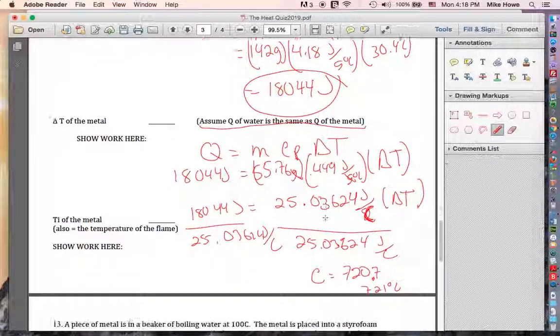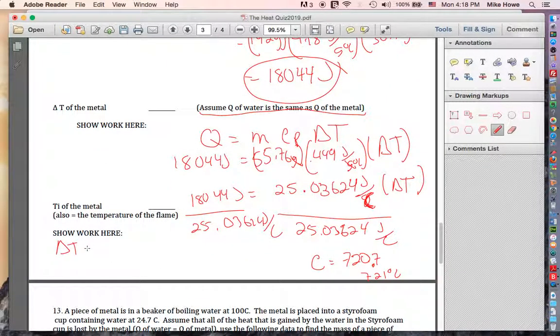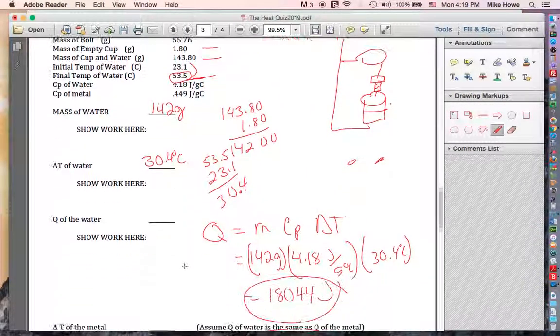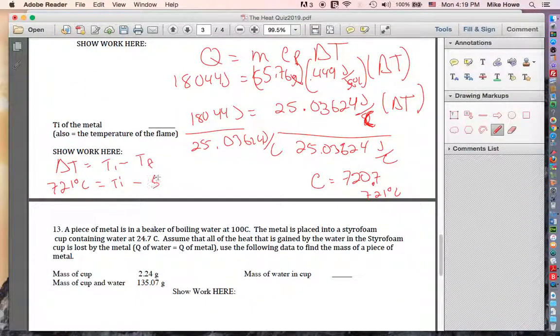But we do know the change in temperature. So basically you know that change in temperature would be the hot temperature, the beginning, minus the colder temperature, which would have been the temperature of the water. So we know delta T is 721. We know that TI is unknown. We're trying to find that minus T final. We know T final. It was 53.5. So to solve for TI, we're going to add 53.5 to both sides. So 721 plus 53.5. That's 775. So TI equals 775.